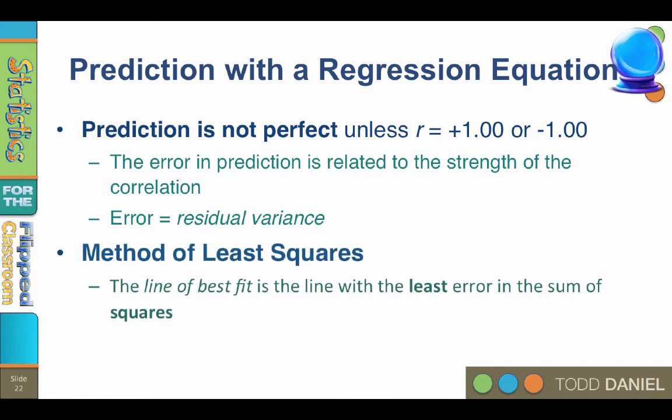We use the method of least squares to create the line of best fit. The line of best fit is the line with the least amount of error in the sum of squares. The line of best fit represents the improvement of the predictive model over simply predicting with the mean.